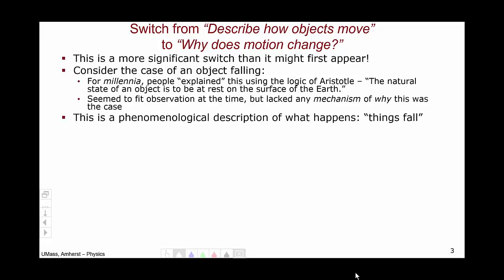In modern terms, we would call this a phenomenological description of what happens. It says things fall. It's the natural state of them to fall. We don't really know why, just they fall. It's a phenomenological description. Without any description of mechanism, why do things fall?